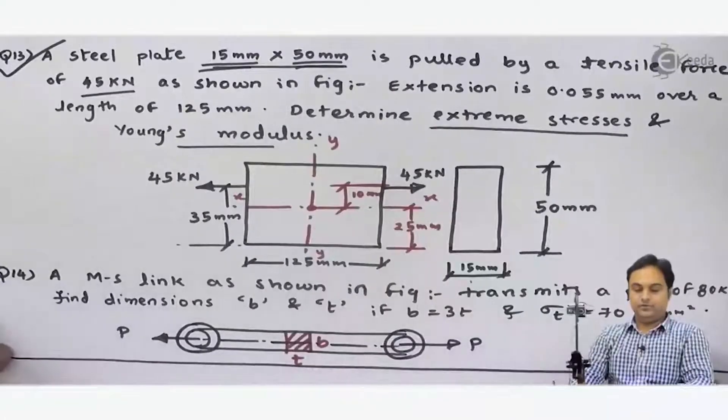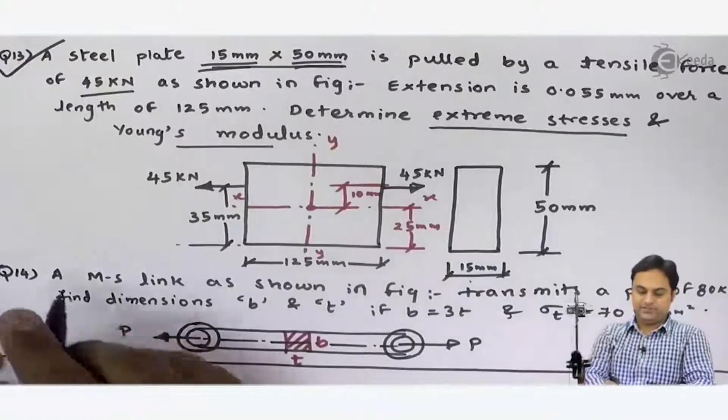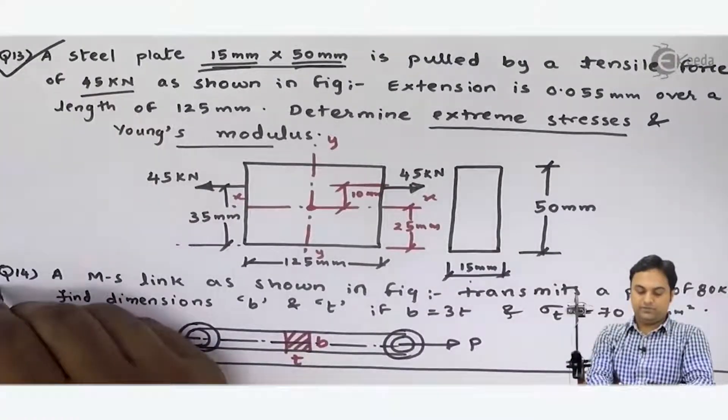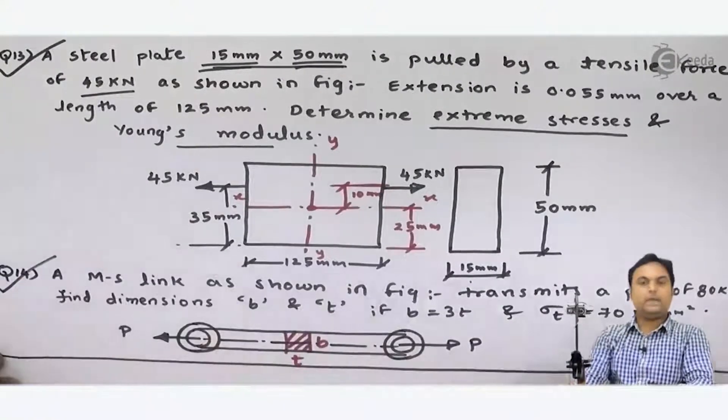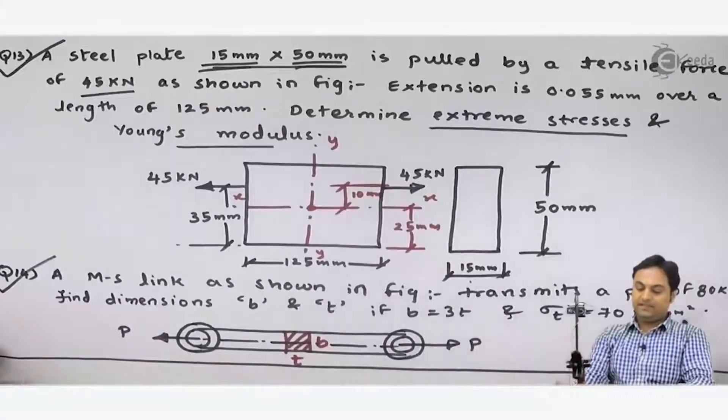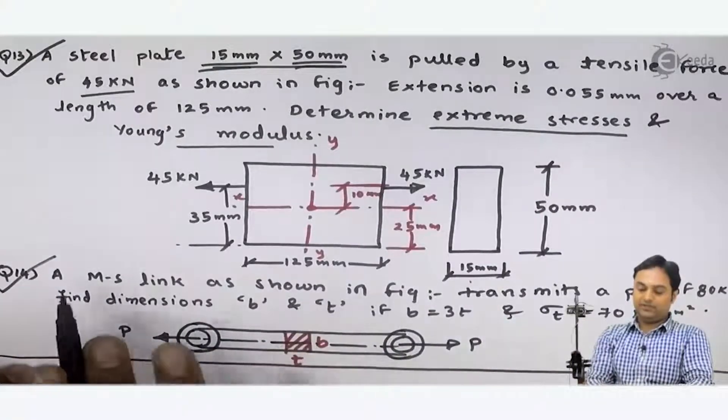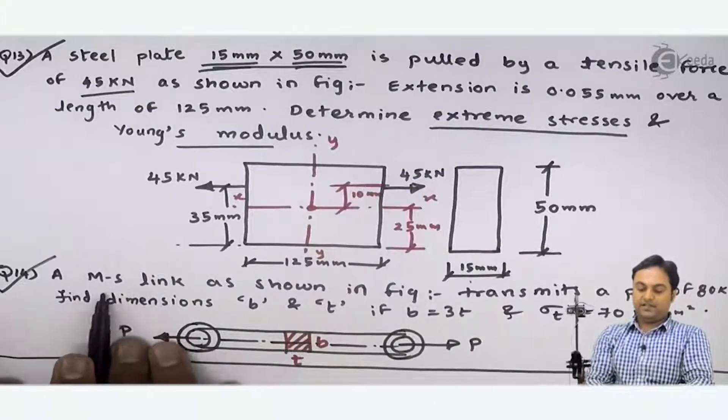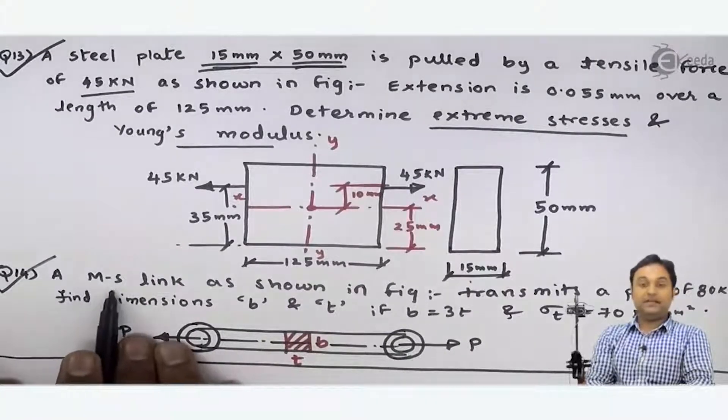We will be solving question number 14 now. Let us mark this question. I will be solving question number 14. What is given? First of all, I'll read the question. A MS link—MS means mild steel.